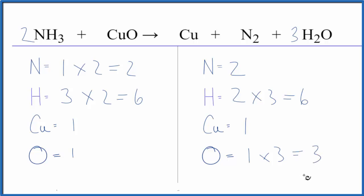At this point, it looks like if I put a 3 here in front of the CuO, that would give me 1 oxygen times the 3. That would give me 3 oxygens, and 1 times the 3. That would give me 3 copper atoms.